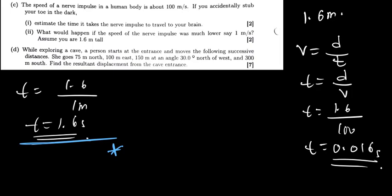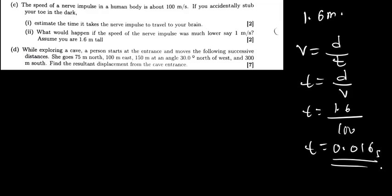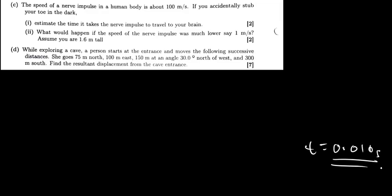That's all, so that is it for part C. Let's go to D. D is saying it's a vector problem. For this vector problem, I would do it like this, so that I have enough space. While exploring a cave, a person starts at the entrance and moves the following successive distances. To make things simple for me, I'm going to write an XY plane.